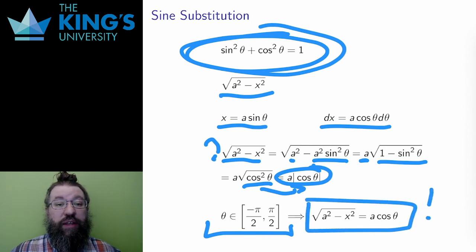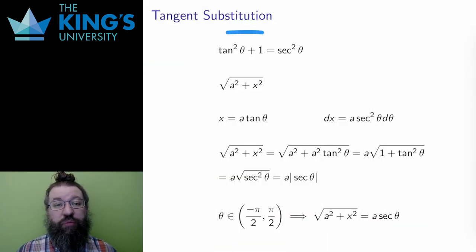This means that the square root gets replaced with a cosine theta without the absolute value bars. And then the substitution has gotten rid of the square root with a trig identity. This is the main idea: a trig identity to get rid of the square root.